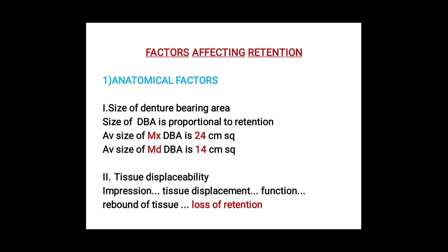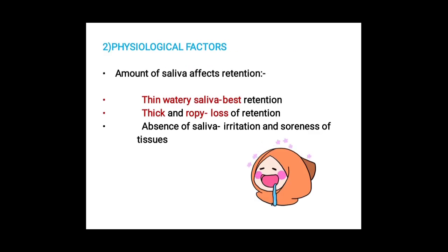The second anatomical factor is tissue displaceability. When we take an impression, the tissue gets displaced. We need to apply adequate pressure; otherwise, once we remove the impression, the tissue will rebound. After framing the denture base and inserting it, this rebound factor causes loss of retention.